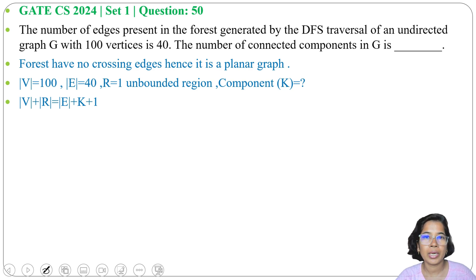If there is one connected component, if there are multiple connected components, then it will be E plus K plus 1. Here K for connected component, number of connected components. And R is the region. V is the vertices and E is the edges. V is given as 100, E is given as 40.